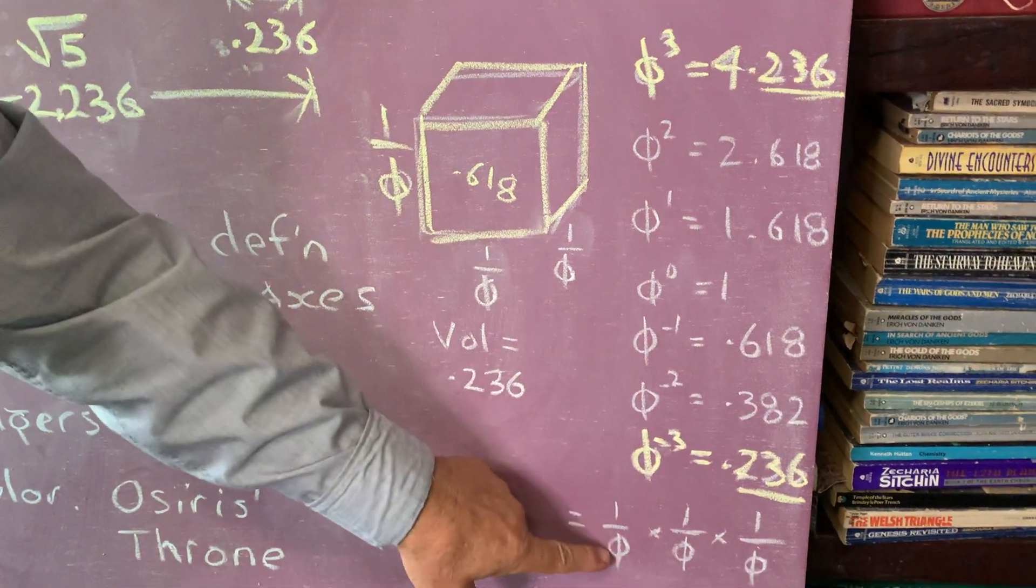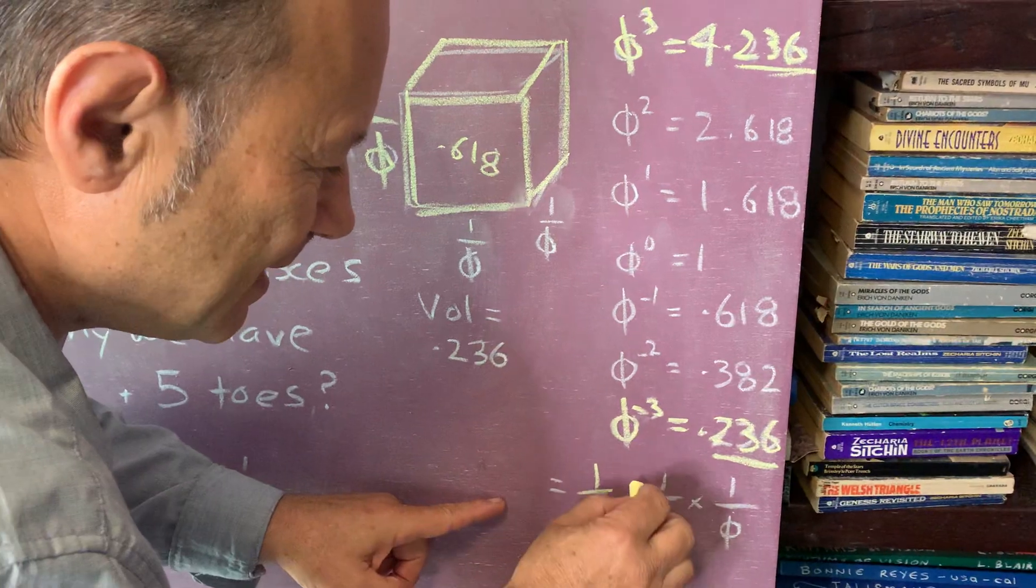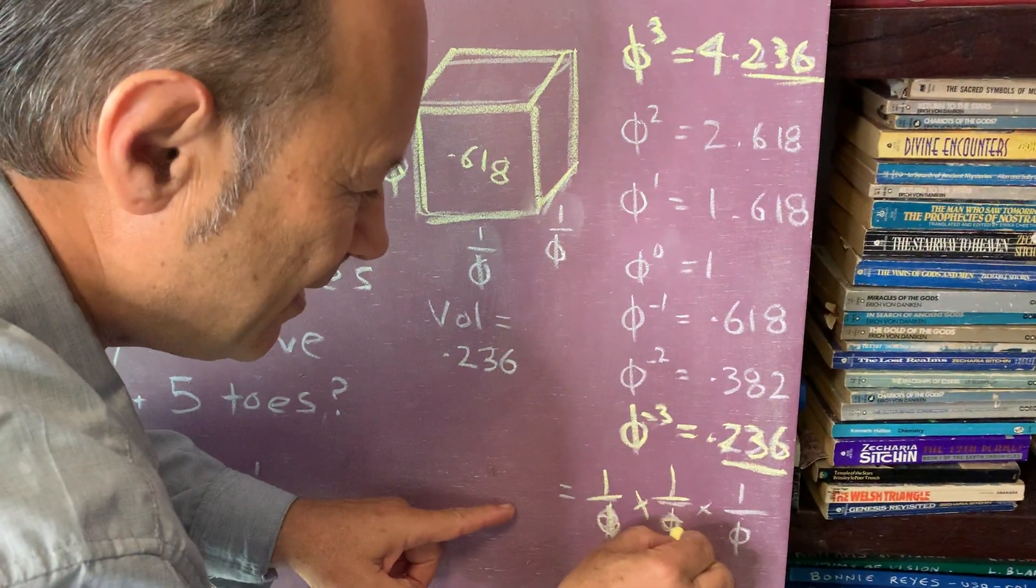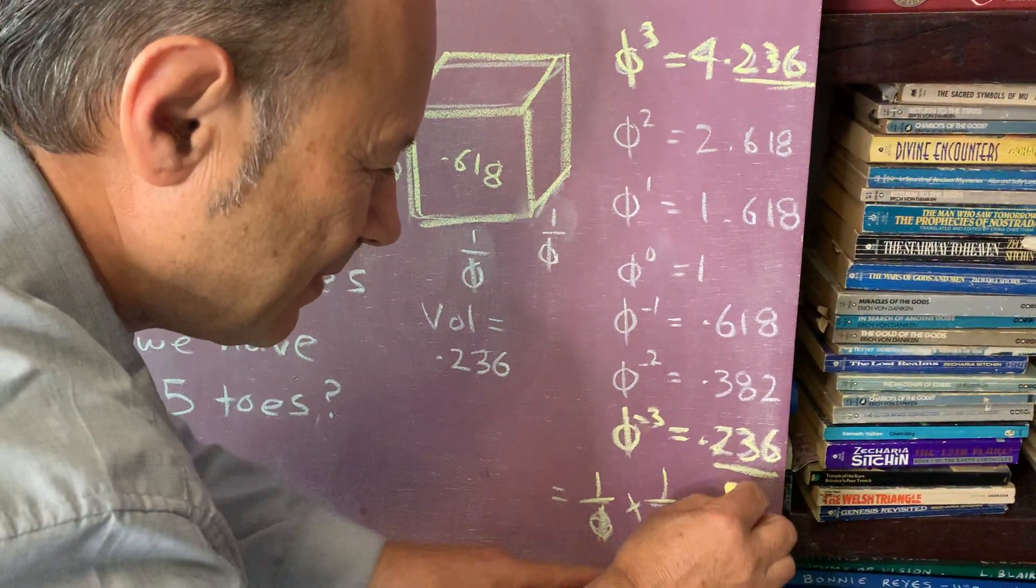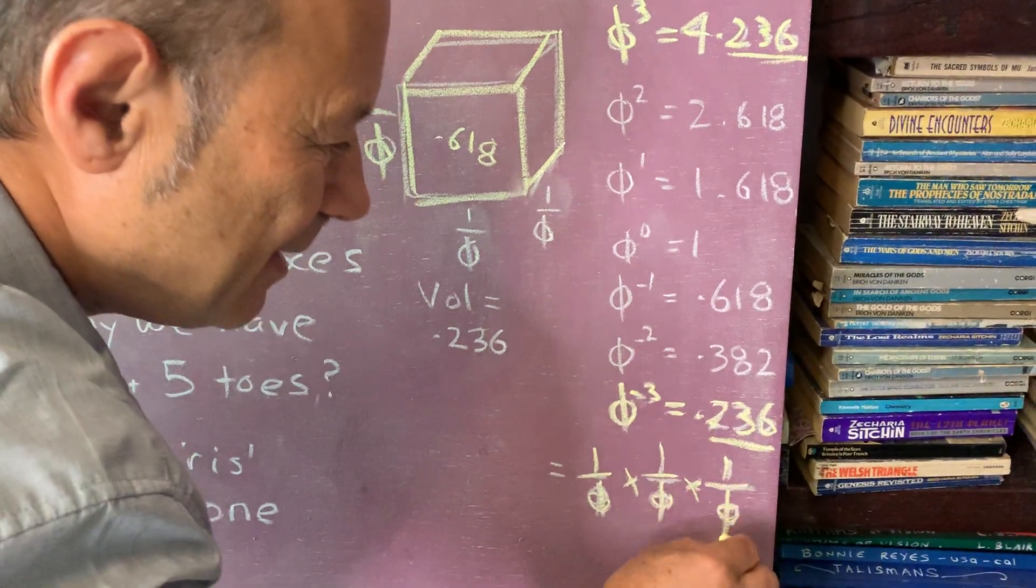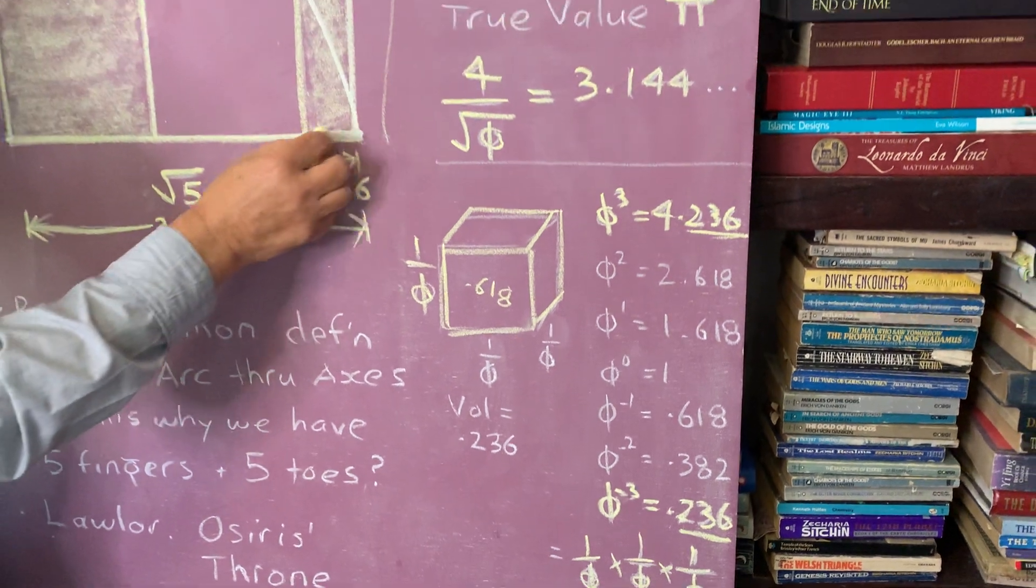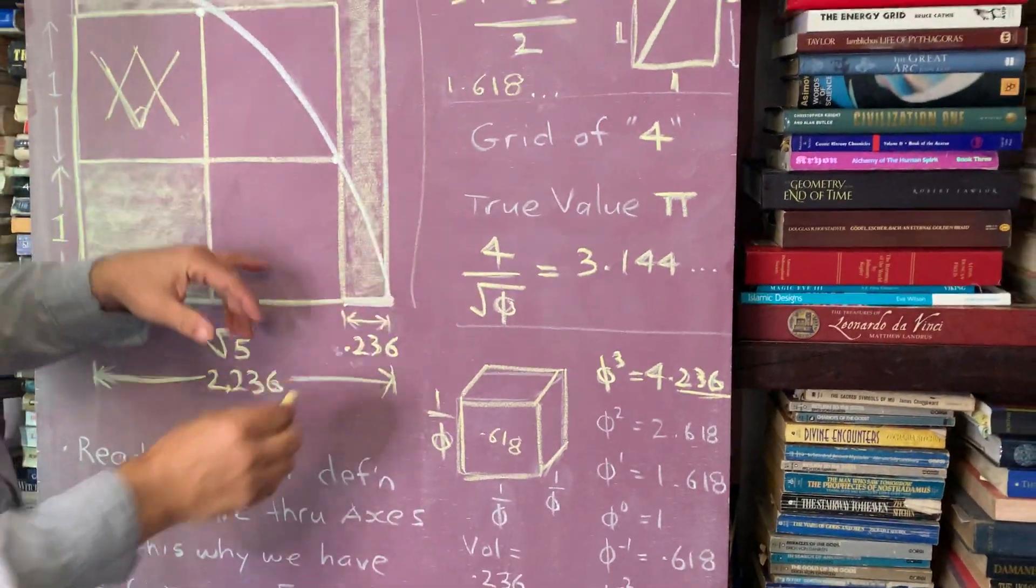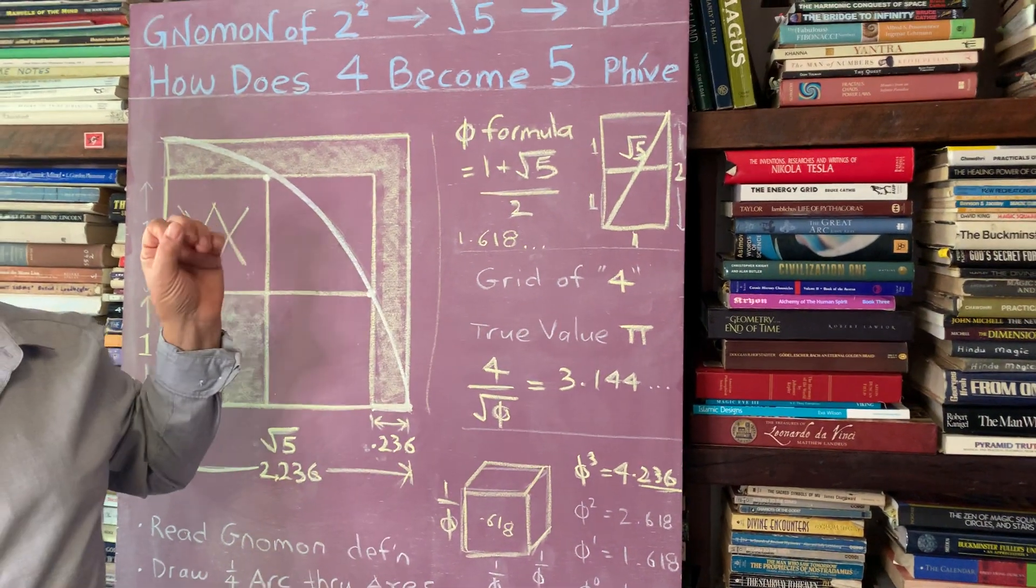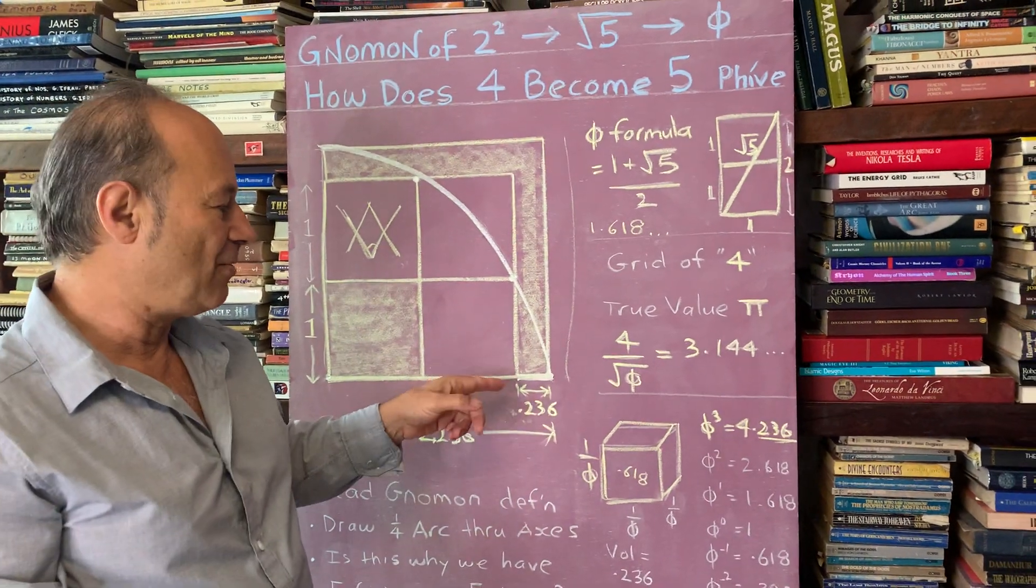1 on phi, that's 0.618 times 1 on phi, that's another 0.618. We're getting smaller and smaller, gives us the 0.236. You can see that this critical aspect here, how the 4 becomes a 5, is all based on the harmonics of the golden ratio.